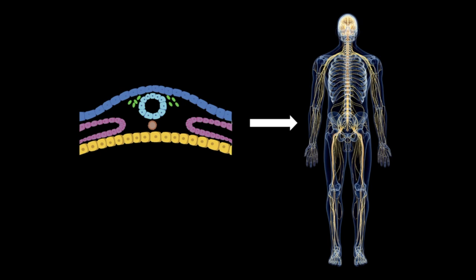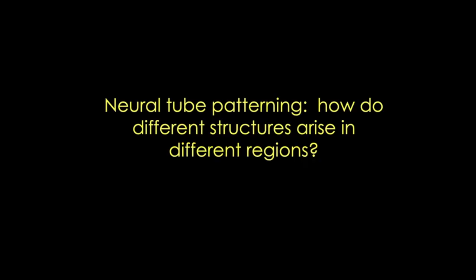This could be the subject of about 100 videos, but here I'm going to skim across the surface and give you a basic understanding of how the early neural tube acquires a basic plan. The nervous system is patterned by a series of signaling events that turn on different genetic programs to pattern along two basic axes: the cranial-caudal axis and the dorsal-ventral axis.